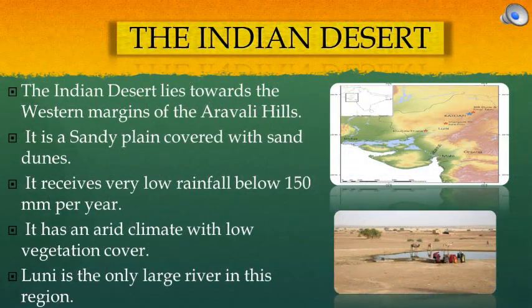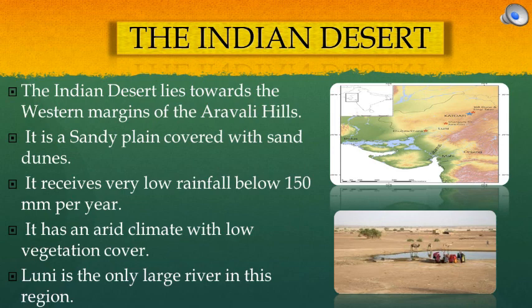The Indian Desert lies towards the western margins of the Aravalli hills. It is a sandy plain covered with sand dunes. It receives very low rainfall — below 150 mm per year — and has an arid climate with sparse vegetation. Luni is the only large river in this region.